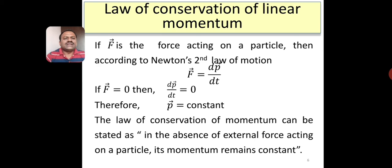To understand the law of conservation of linear momentum, suppose F is the force acting on a particle. Then according to Newton's second law of motion, force is equal to rate of change of momentum with respect to time, that is dp divided by dt. Suppose if F is equal to 0, in that case dp divided by dt is equal to 0, therefore p is equal to constant.